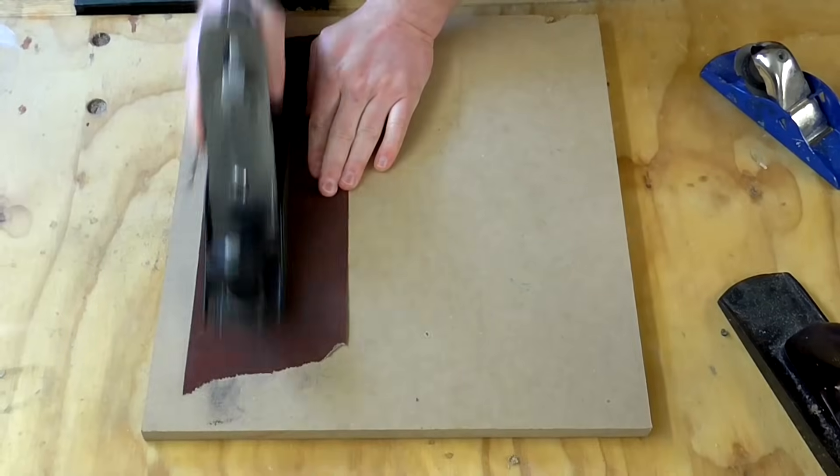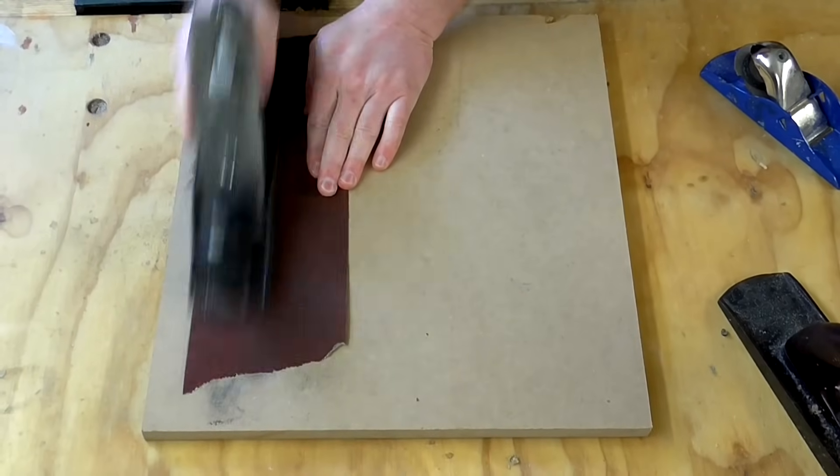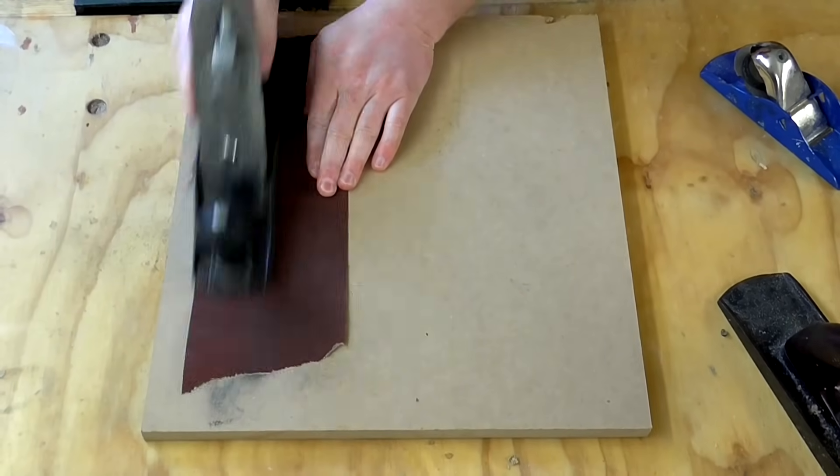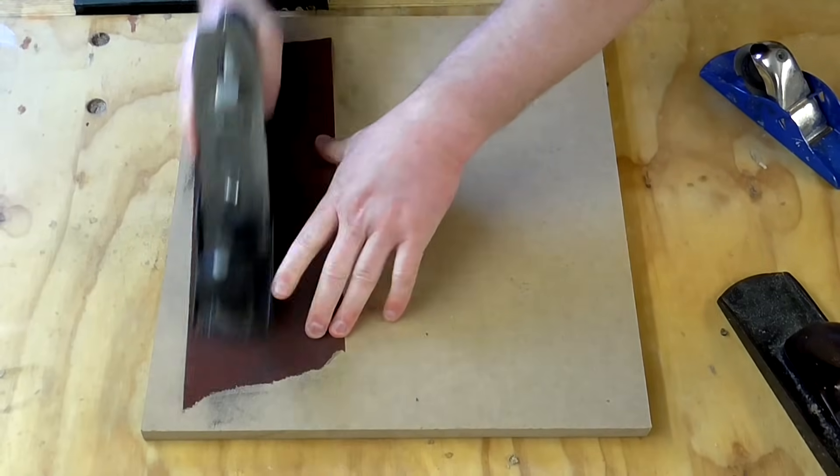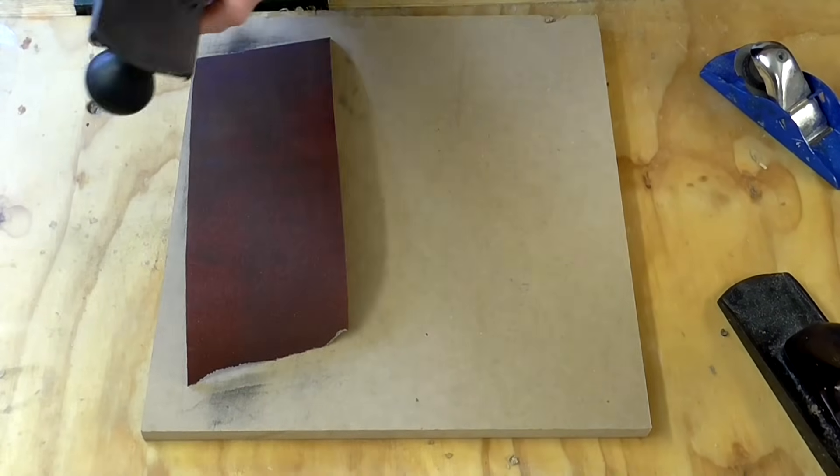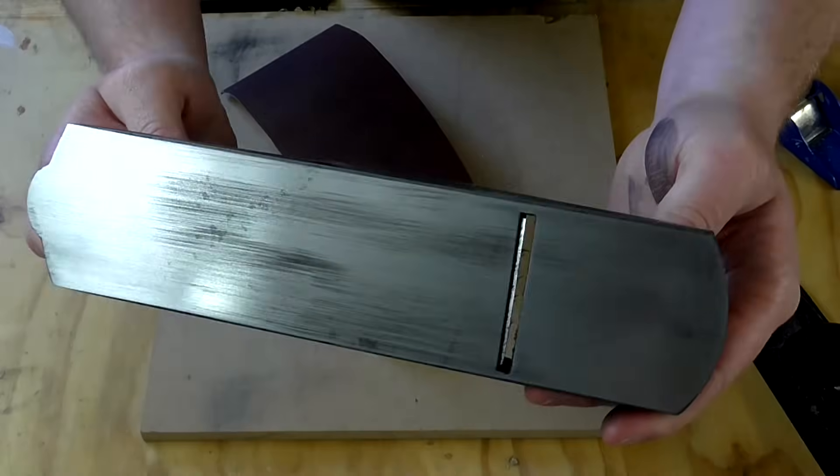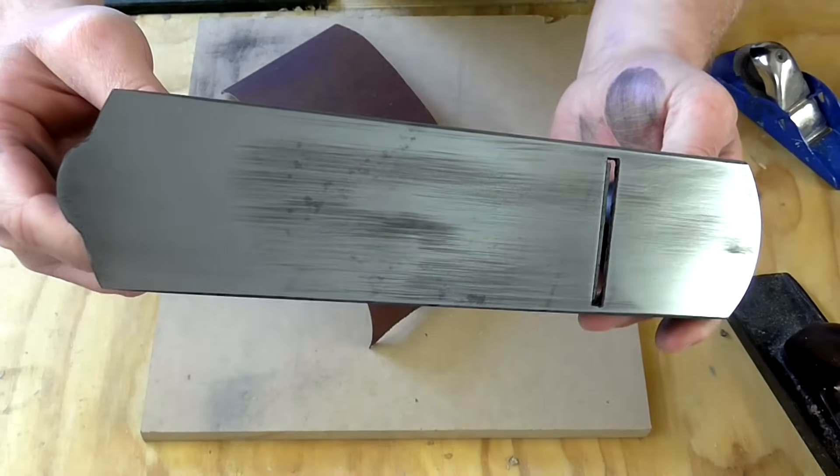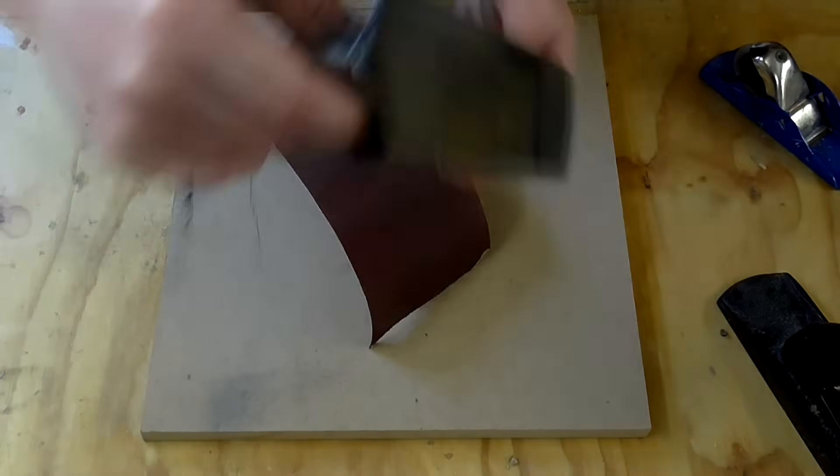If it seems to be badly out of shape then you might want to start with a more aggressive paper like 80 grit which will remove material more quickly before using 120 grit. There's really no need to go above 120 grit as that is plenty smooth enough. Once the sole is flat it's really important to lubricate it which I'll talk about a bit later.